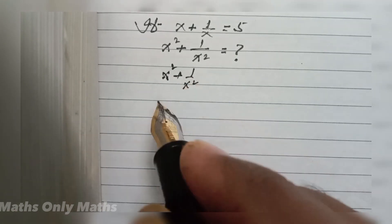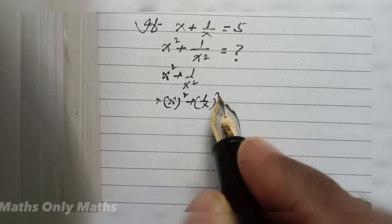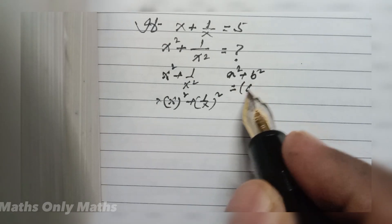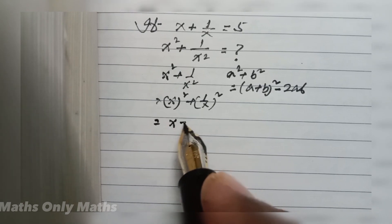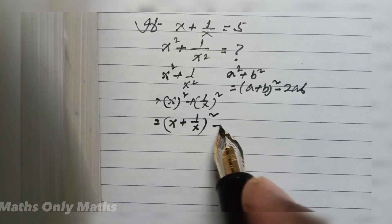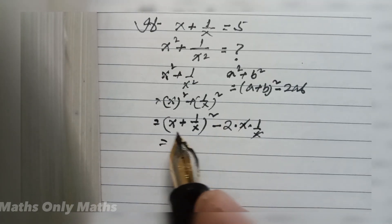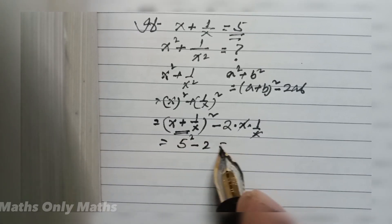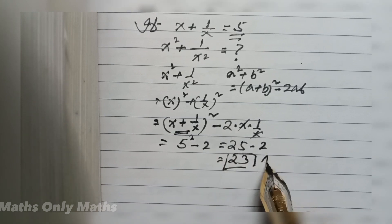x square plus 1 by x square can be written as x plus 1 by x whole square. The formula of a square plus b square is a plus b whole square minus 2ab. So I can write x plus 1 by x whole square minus 2 times x times 1 by x — the x's cancel. Now x plus 1 by x is 5, so I write 5 square minus 2, which is 25 minus 2. The answer is 23.